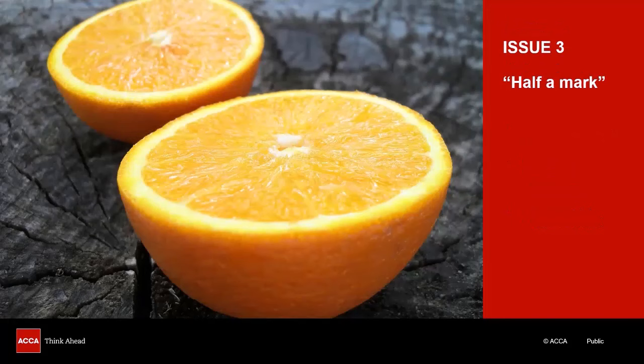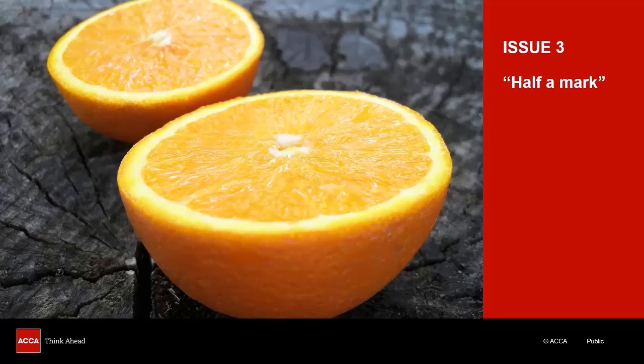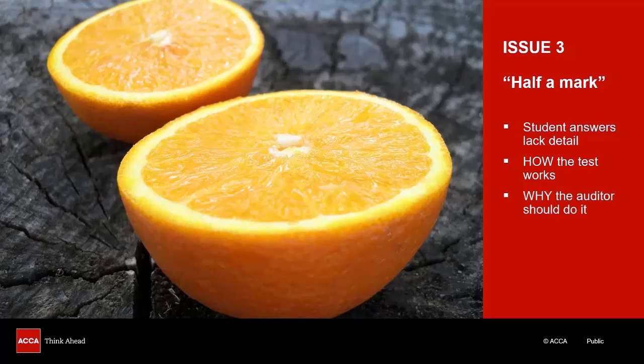Instead you have to suggest high-value tests. Third issue: this happens so often with students on my course when I take their work in for marking. They only score half a mark for their audit procedures — it happens in practice work and in the real exam. The examiner confirms this in their examiner's report. Why do they only score half a mark? The answer doesn't have enough detail for it to score a full mark. Audit procedures are always one mark per well-explained procedure, but you have to fully explain your procedure. You must explain how the test works and why the auditors should do it.